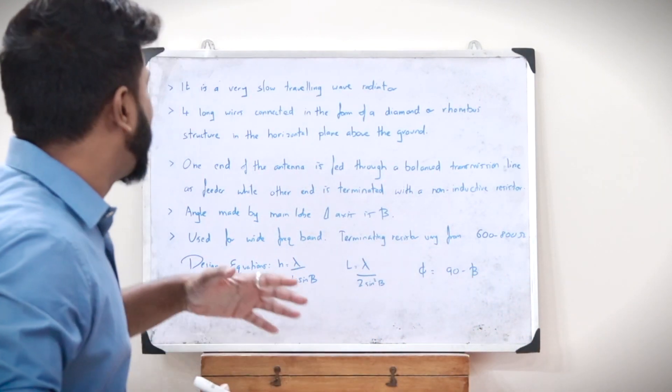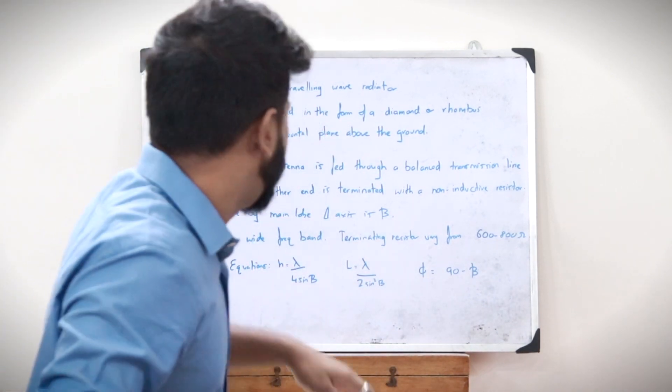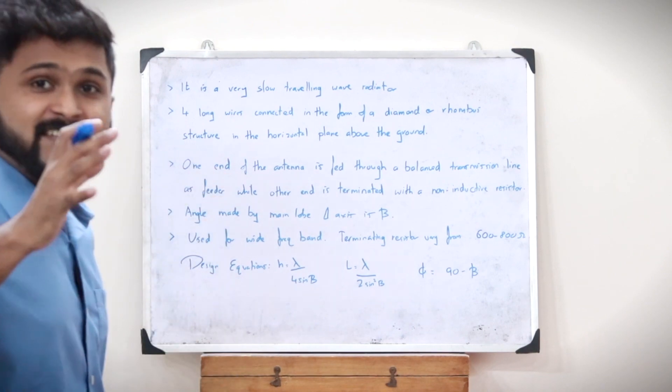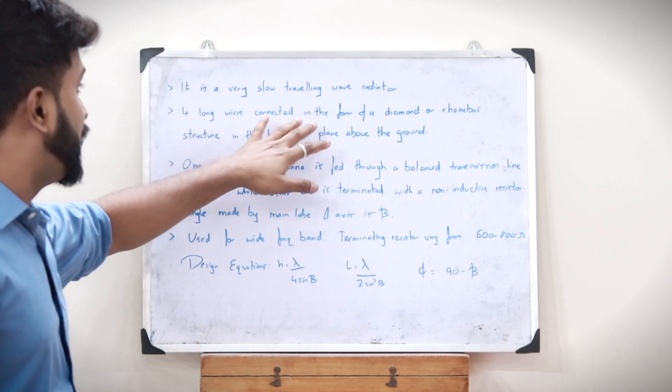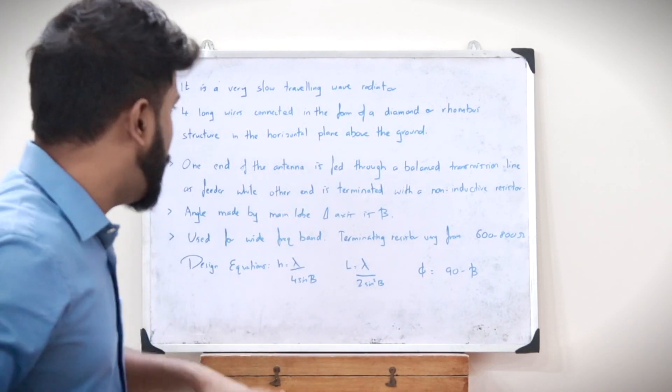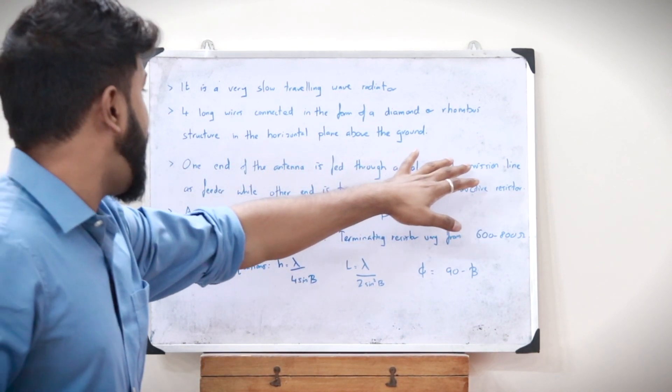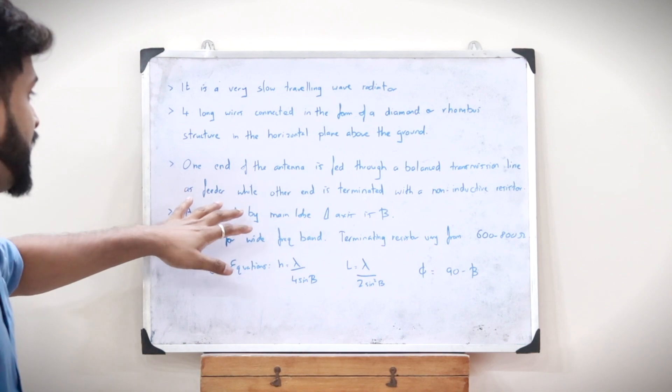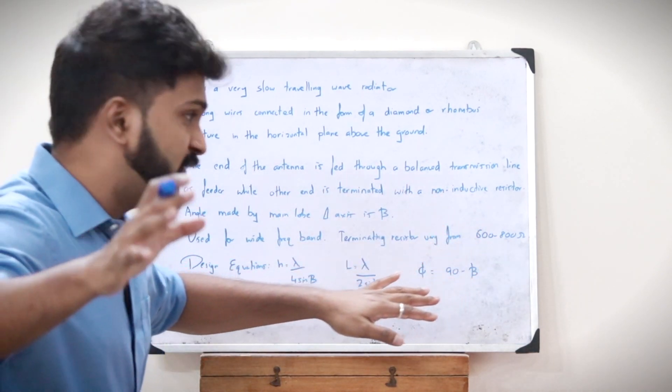In the case of rhombic antenna, it is a very slow traveling wave radiator. It is in the shape of a rhombus, that is four long wires connected in the form of a diamond or rhombus structure in the horizontal plane above the ground. One end of the antenna is fed through a balanced transmission line as a feeder, while the other end is terminated with a non-inductive resistor.